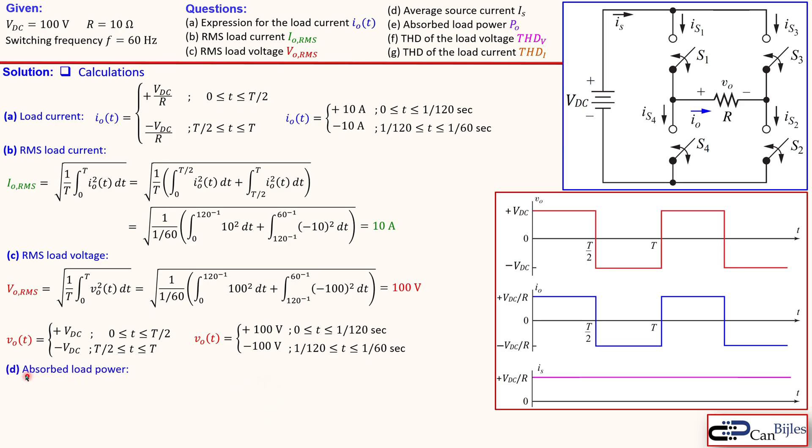Question D is about the absorbed load power. Then we can use this formula. Or you can also use the V_ORMS squared over R. So it doesn't matter in this case. And now we know this I_ORMS that is 10 squared times the 10. So you actually get effectively 1000 watt or 1 kilowatt.